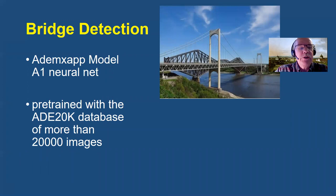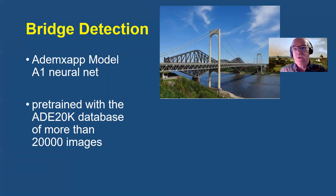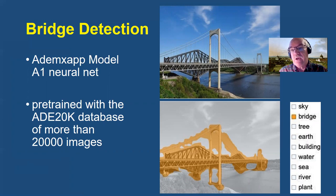Here's an example of bridge detection using the AdamX app model A1 neural net, which has been pre-trained with the ADE 20K database of more than 20,000 images. This is a challenging image because there are two bridges here — this is the St. Lawrence River at Quebec with the Pierre-la-Porte suspension bridge in the foreground and the historic Quebec bridge, a steel cantilever, in the background. The software has successfully identified the sky, tree, earth, building, water, sea, river, and plant components of this picture, and has done quite a good job identifying what in the image are actually bridges.